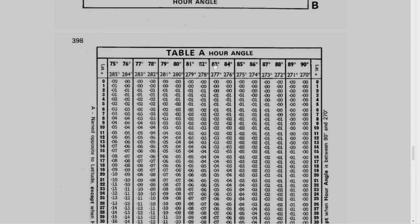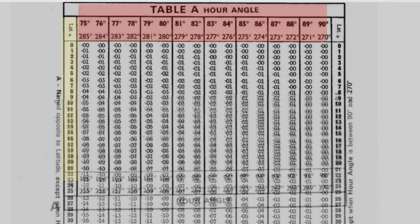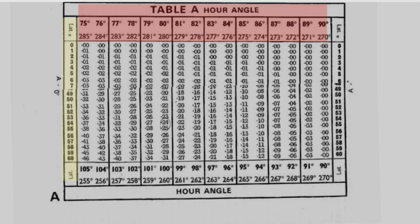The upper and lower portion of the table is our LHA, and the left and right side is the latitude. As you can see, the LHA has two values. Let's find which value falls closest to our LHA.